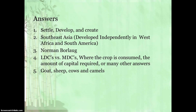Here are the answers. First question — what has agriculture allowed us to do? It's allowed us to settle, develop, and create civilizations. Question two — where was vegetative planting? The main hearth was Southeast Asia, and also keep in mind it developed independently in West Africa and South America. Question three — who was credited with the Green Revolution? That would be Norman Borlaug. Question four — for subsistence versus commercial: subsistence is often in LDCs while commercial is often in MDCs. In LDCs the crop will usually be consumed right on the farm, while in MDCs it's usually sent to a processing plant and then to a grocery store, so it's mainly not consumed where it's produced.